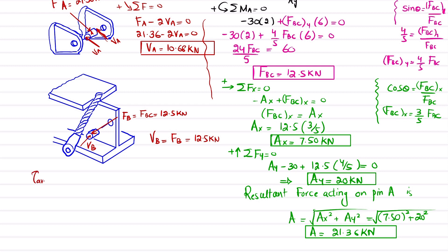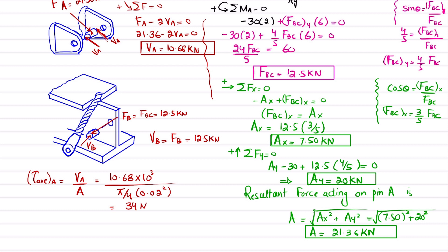The average shear stress at point A equals the shear force VA divided by the shear area. The pin diameter is 20 mm, so: tau_A equals 10.68 × 10³ N divided by (π/4 × (0.02)²). Solving this gives the average shear stress at point A equal to 34 MPa.